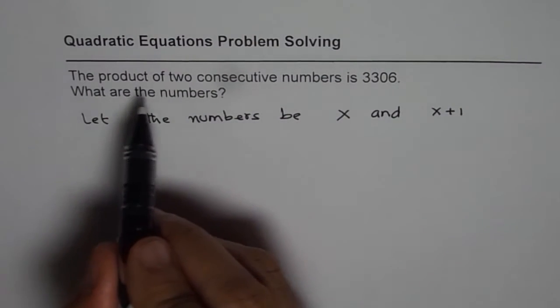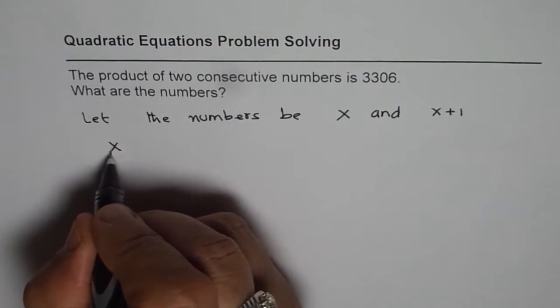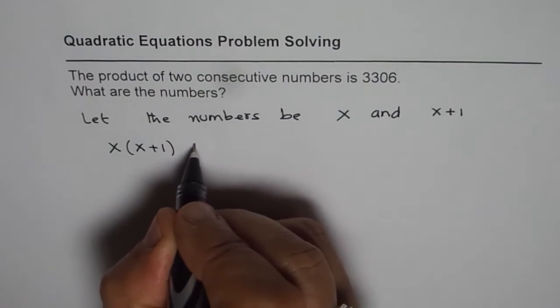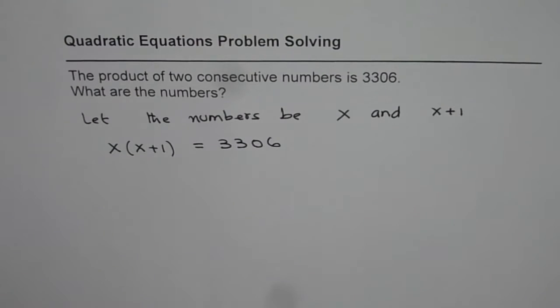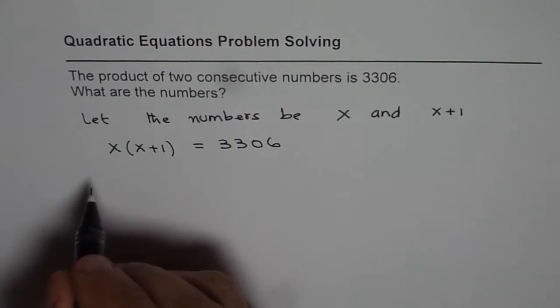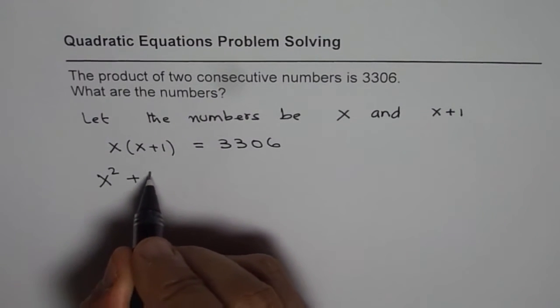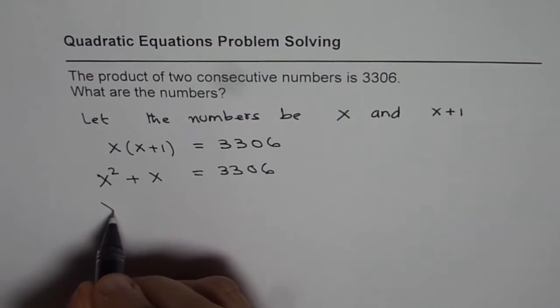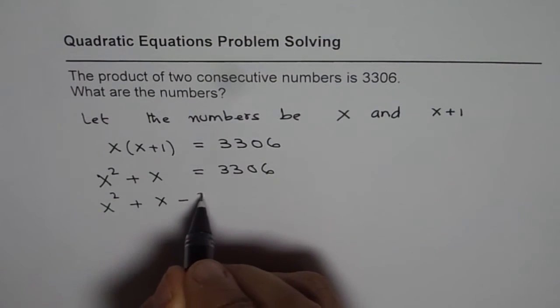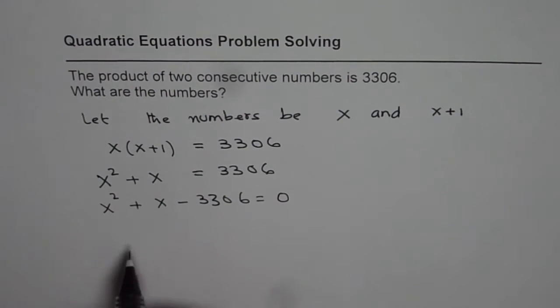Now the question is, the product of two consecutive numbers is 3306. That means x times x plus 1 is equal to 3306. So that is how you get your equation. Now this is a quadratic equation, which you can expand. So x squared plus x equals 3306. Bring the terms together: x squared plus x minus 3306 equals 0. And then you can find the solution for this equation.